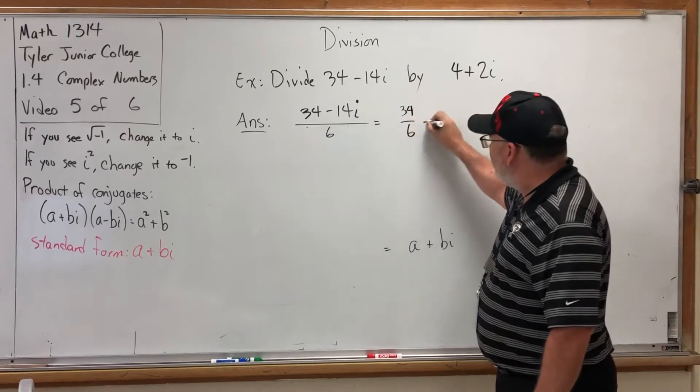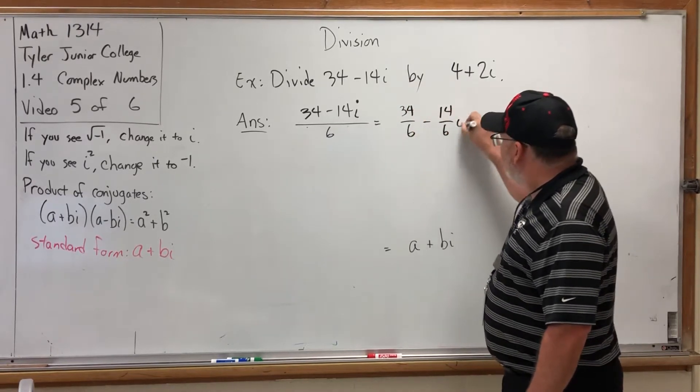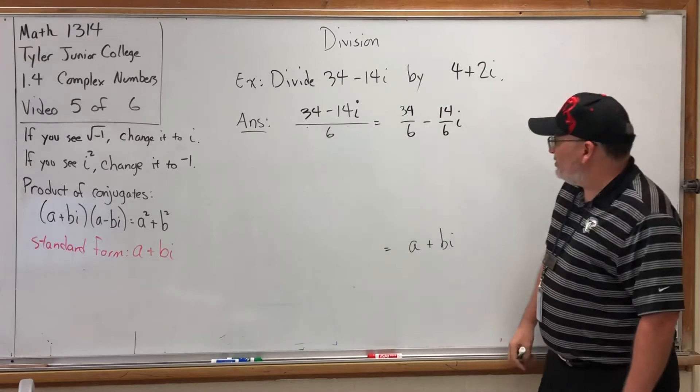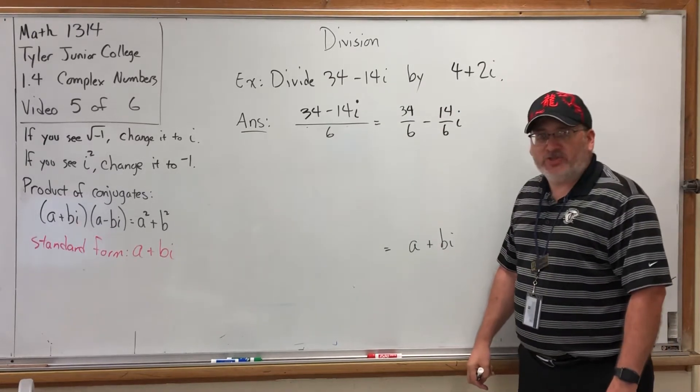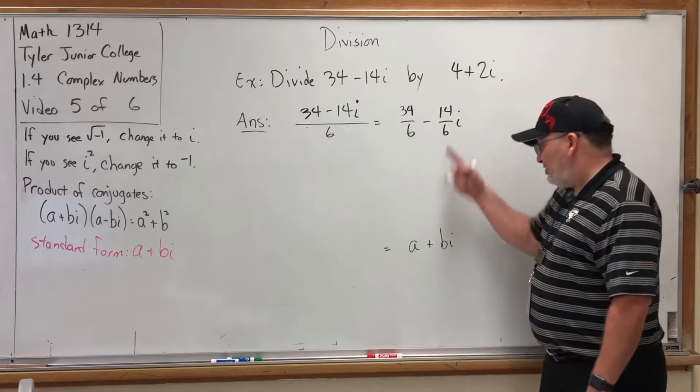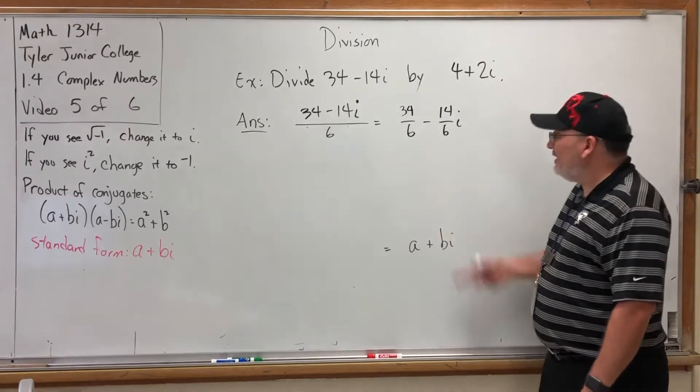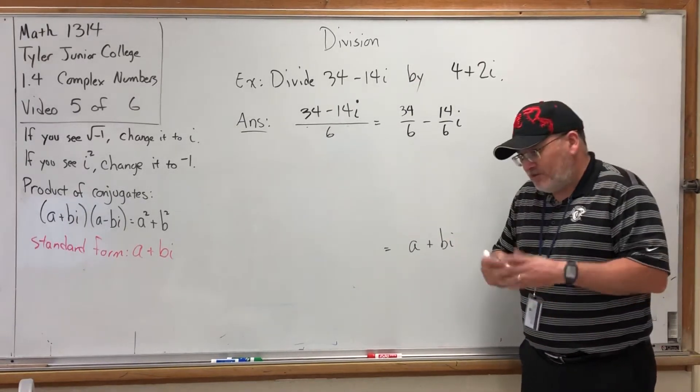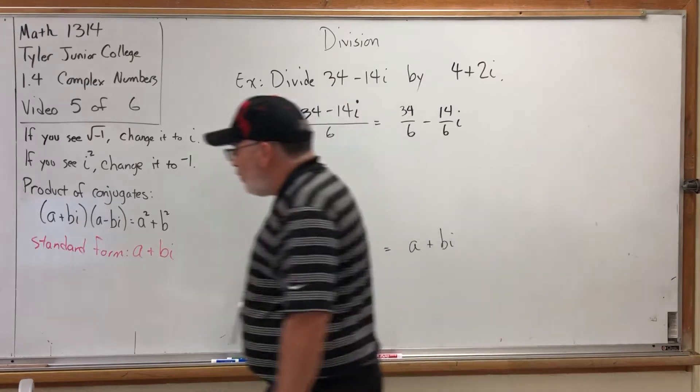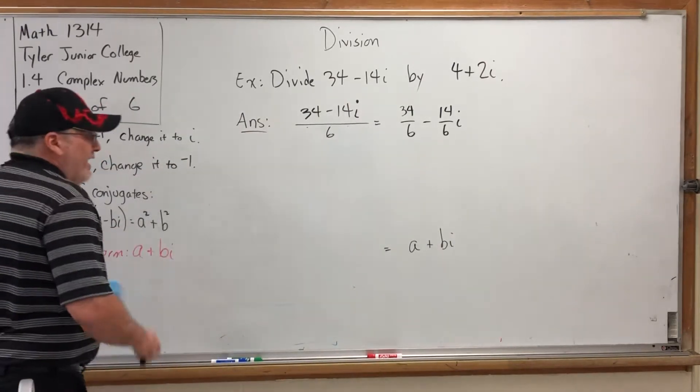These numerators have already been combined. I can uncombine them by splitting it into two fractions with the same denominator: 34/6 - 14i/6, which is technically in standard form. It can be reduced, but that's just a matter of doing it.